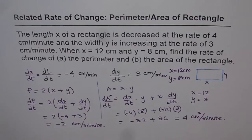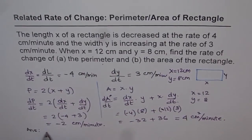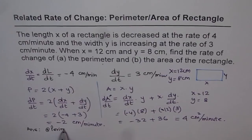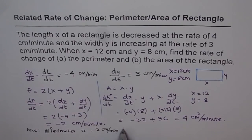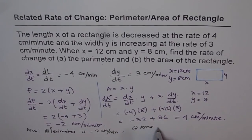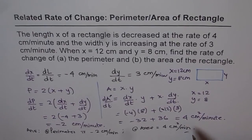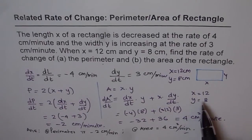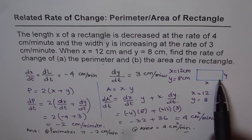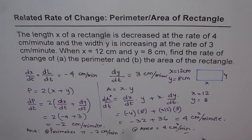We can now write down our answers clearly. The rate of change of perimeter is minus 2 cm per minute, and the rate of change of area is equal to 4 cm² per minute. As you can see, the perimeter is decreasing, and its rate is independent of the size of the rectangle. As far as area is concerned, the area is actually increasing at the rate of 4 cm² per minute.